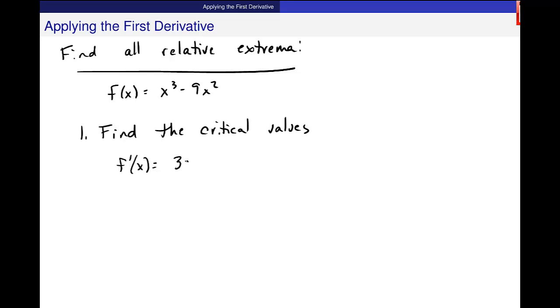So to find critical values I first find the derivative. And I get 3x squared minus 18x. And then I set the critical values are where f prime is zero or f prime is undefined. In this particular function there's no place where x could be in the denominator. So there's no place where this function could be undefined. This is just a polynomial and its domain is minus infinity to infinity. But it could be equal to zero. So let's solve for that.